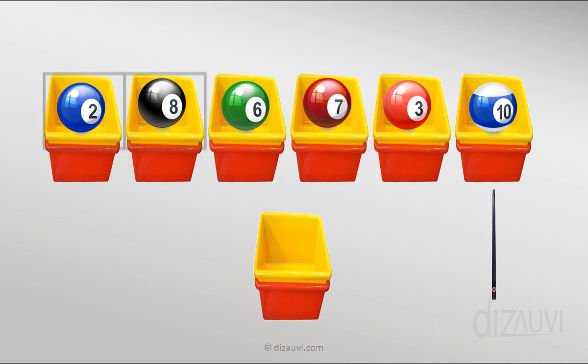Now we again start from the leftmost bin and compare the cue balls in the first and second bins. Now 8 is greater than 2, so we don't do anything, alright? We don't need to swap the balls now. And we just move to the right by one bin.